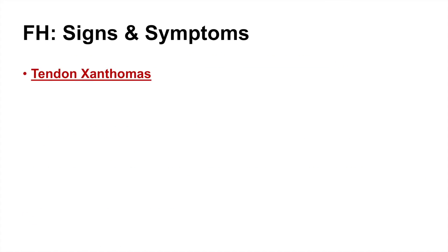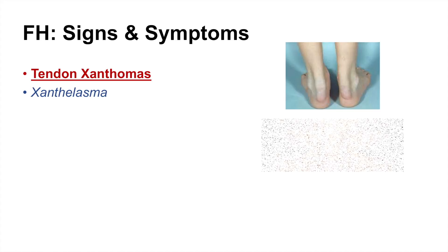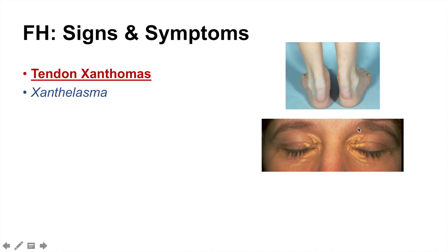Signs and symptoms of FH include a tendon xanthoma, which is a collection of fatty tissue that lines certain tendons — in particular the Achilles tendon — visible as a bulge of accumulated lipids. Xanthelasma is another sign, consisting of a collection of cholesterol around the eyelids appearing as a yellowish buildup around the patient's eyes.